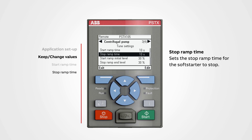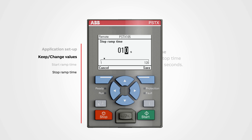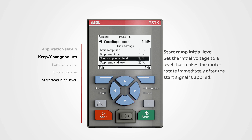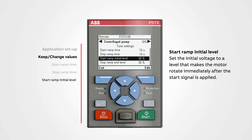Stop ramp time sets the time for the soft starter to stop. A low or high value will affect the stop time — with a higher value the stop time will be longer, and the opposite if you enter a low number. To change a value, push edit. We can set the stop ramp time between 1 to 120 seconds. Use the navigation buttons to change the value, then push save.